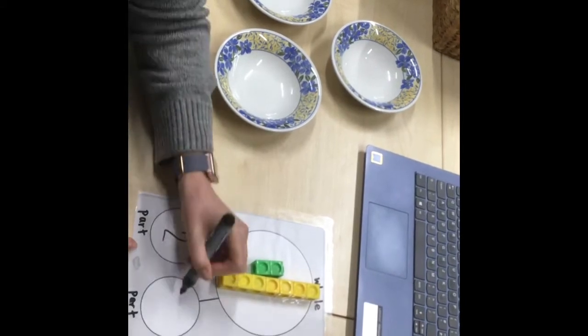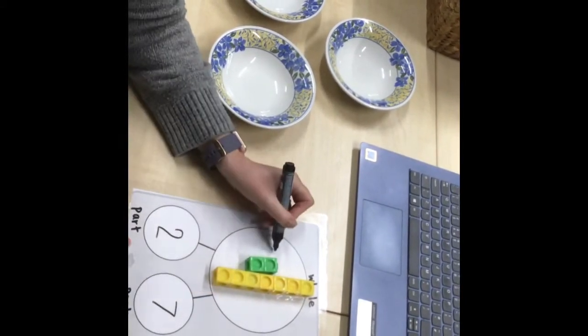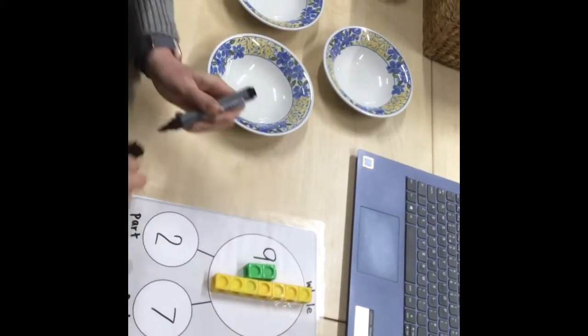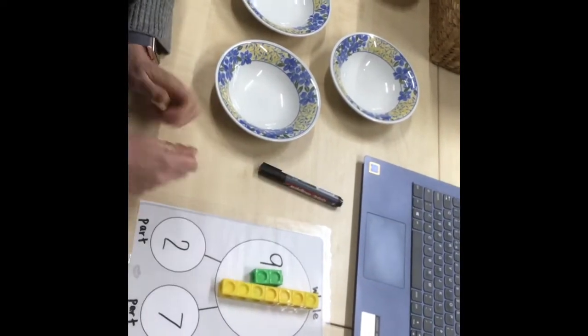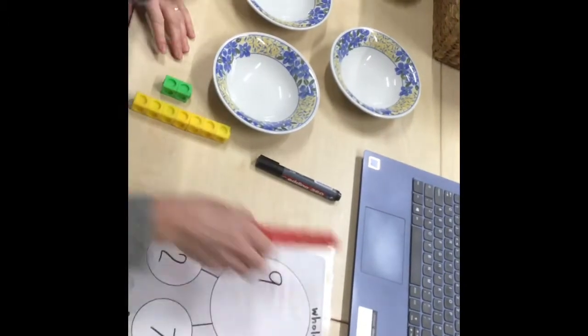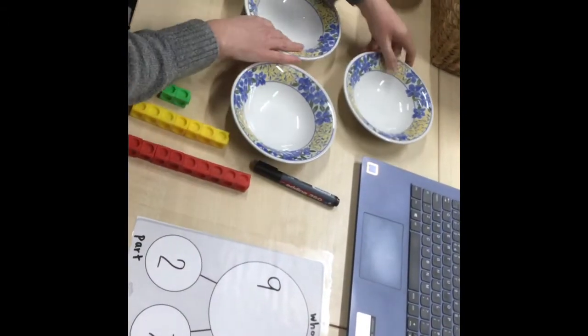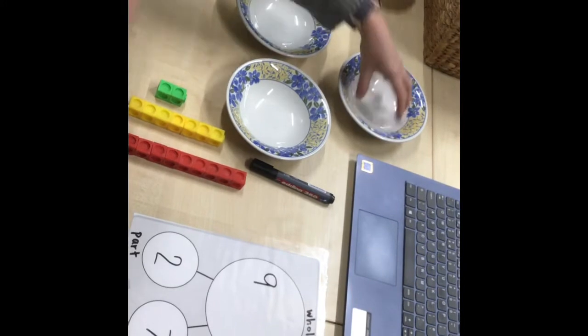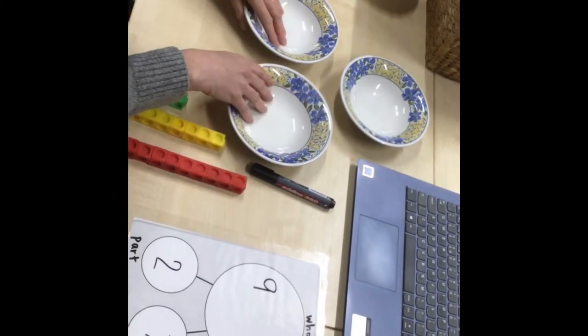Two that I've moved, seven that I've moved, and now I have nine. Now we know that you haven't got one of these part-part-wholes at home, but you know what? You could use bowls instead. So this is going to be our whole number, and these are going to be our part numbers.